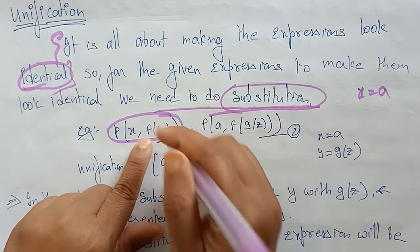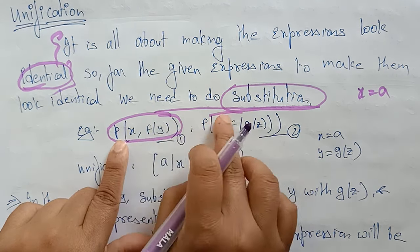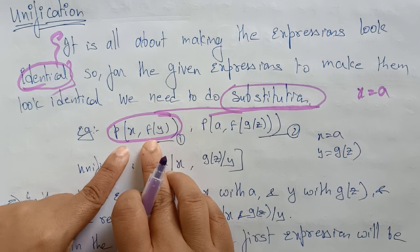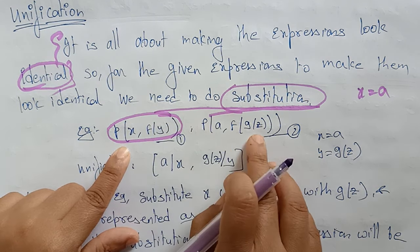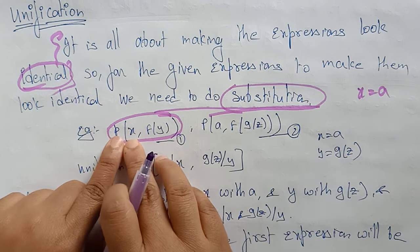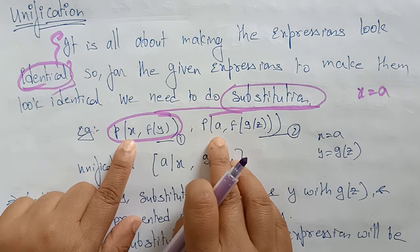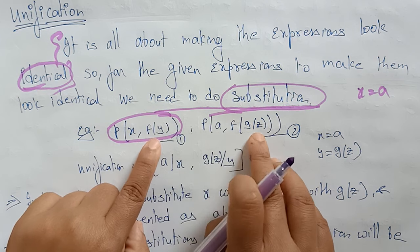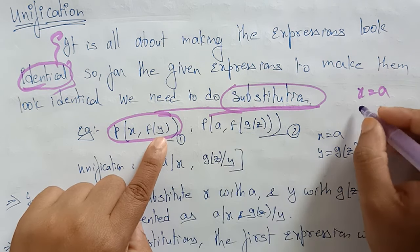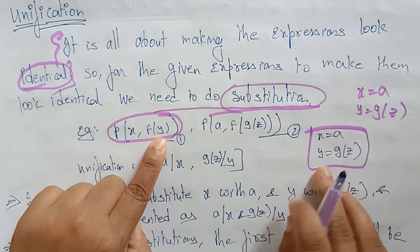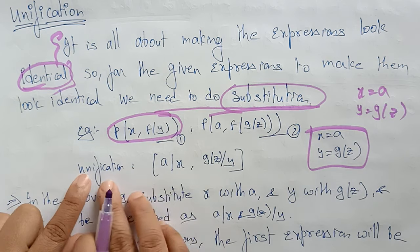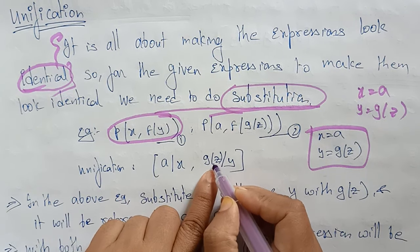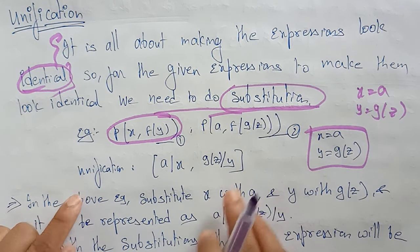Here the function is the same. You have to check whether these two terms are equal or not — meaning you need to check the arguments. First, how many arguments are there in this statement? Two arguments, and in this expression also two arguments. There is a possibility of substitution. Next check: the first argument is a variable, so you can simply substitute it. The second argument has the same function F. So in place of Y, I can substitute G(Z). The unification is written as: in place of X, I am substituting A; in place of Y, I am substituting G(Z).